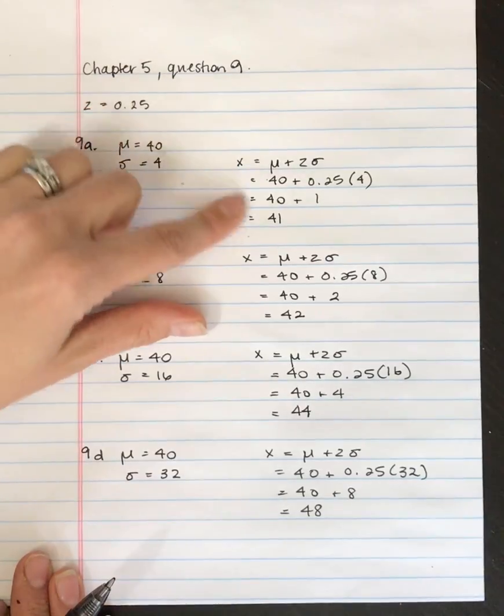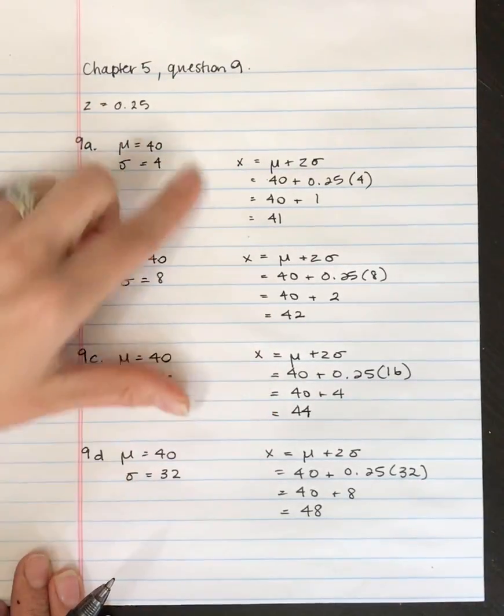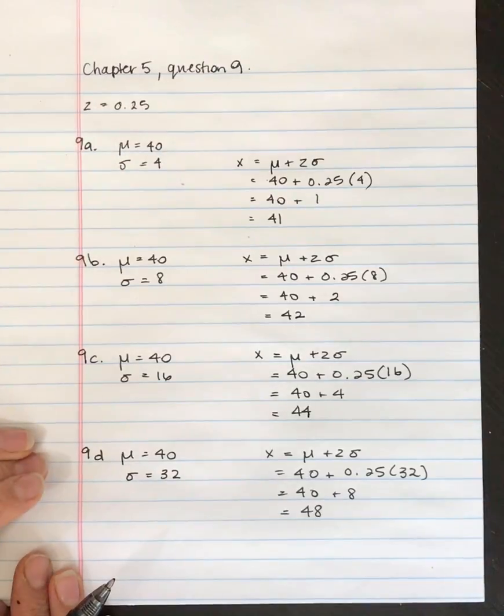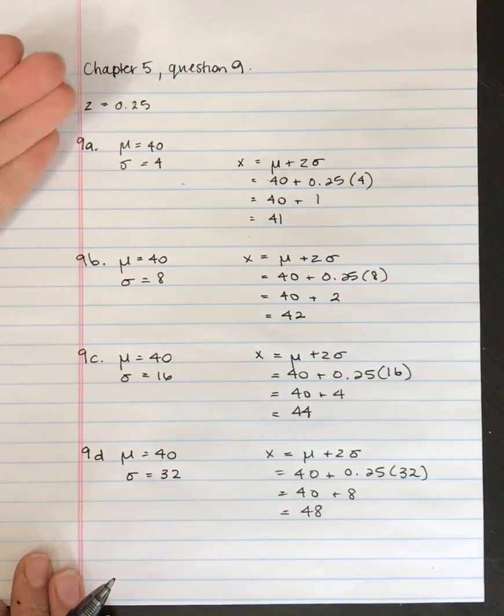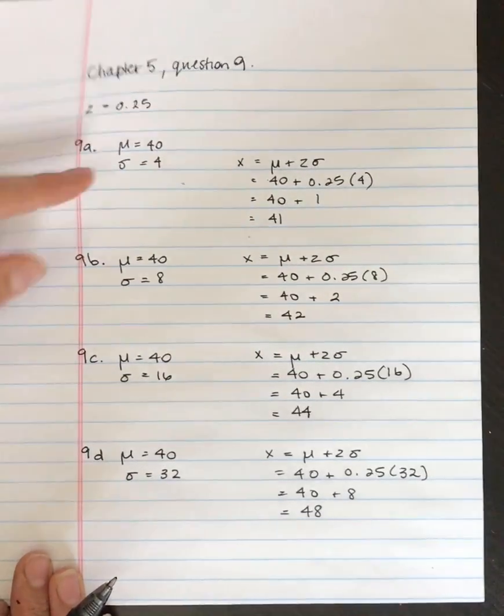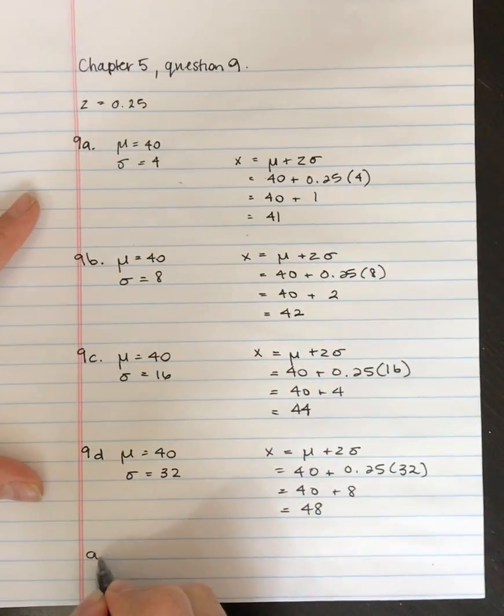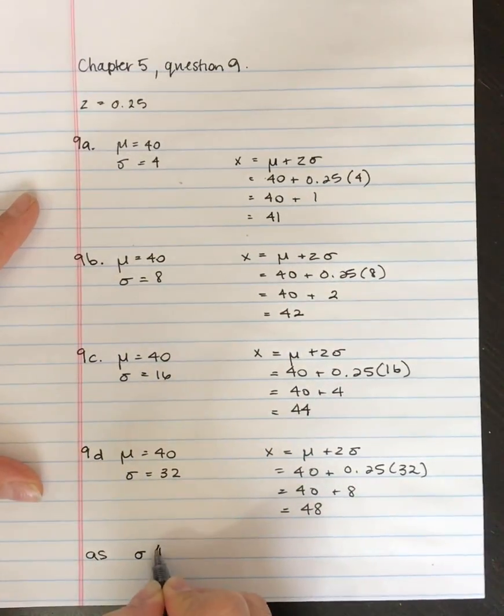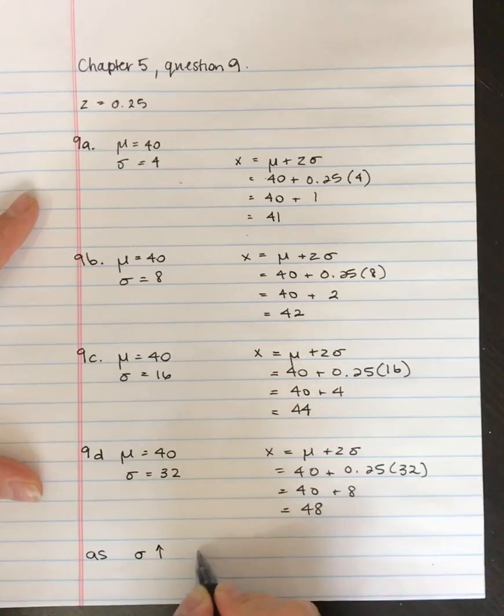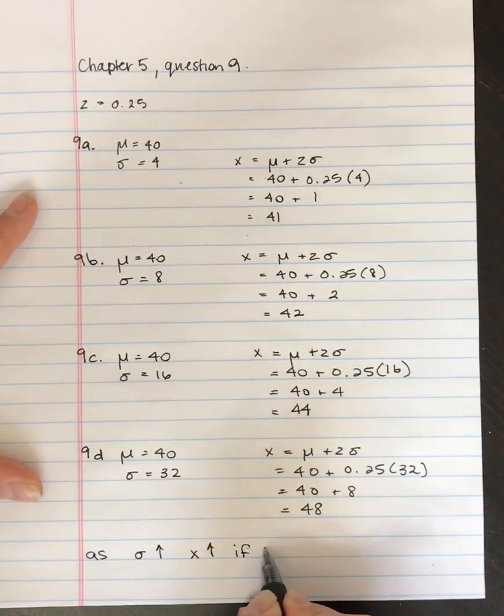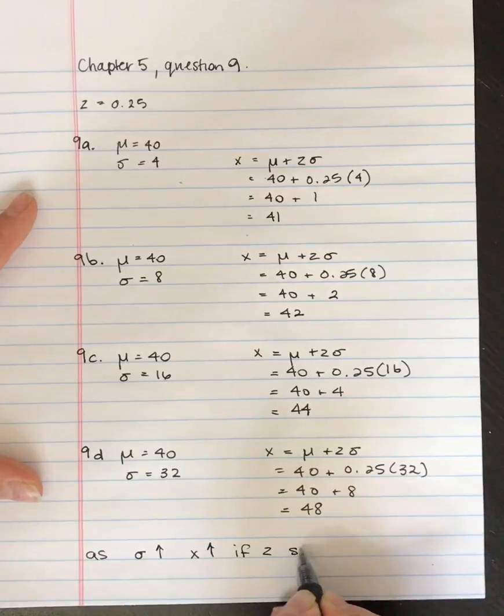And look what that does to the x-score. The x-score gets progressively larger as the standard deviation increases. So there is a relationship here to be seen. As your standard deviation increases, the x-score will increase if the z-score stays the same.